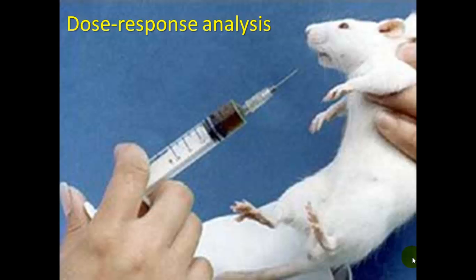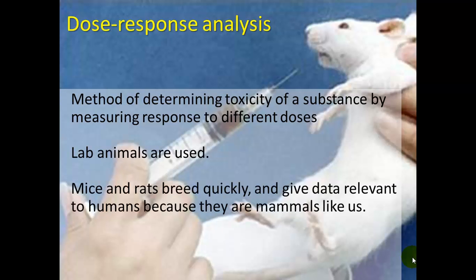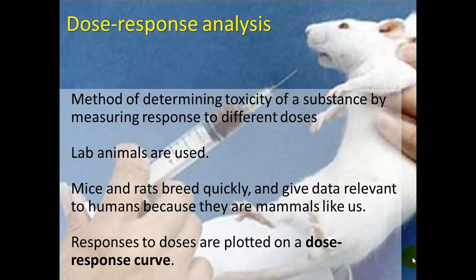Dose response analysis is more precise and quick. It's a method of determining the toxicity of a substance by measuring the response to different doses. Lab animals are used — mice and rats breed quickly, which is an advantage, and they give data relevant to humans because they are mammals like us. But there are differences even between how mice and rats compare to each other in their response to a toxin, so how similar will the human response be?